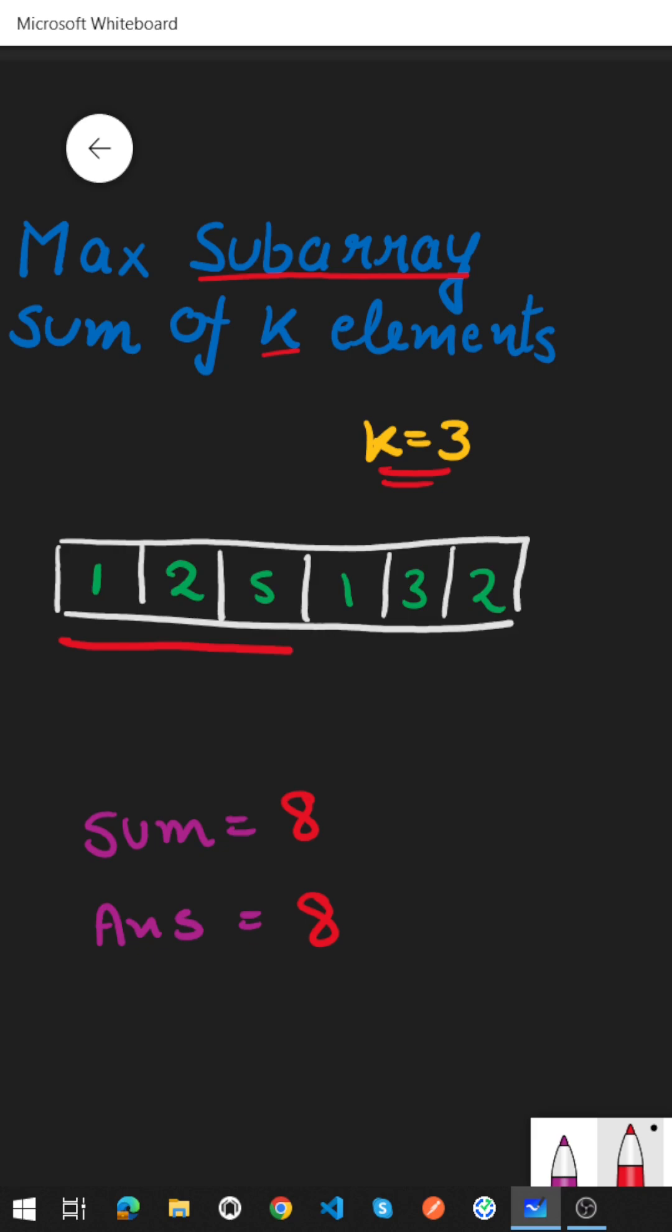Now we need to move our window one step ahead. To move the window one step ahead we will remove this one element and we will include this next element that is 1. So our new window would look something like this: 2, 5 and 1.